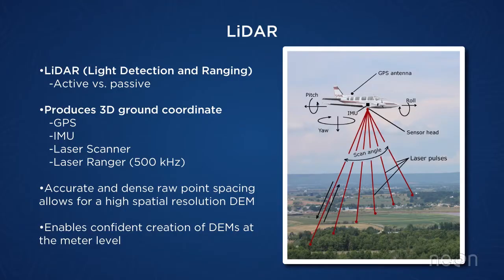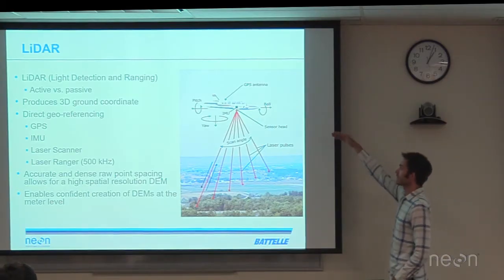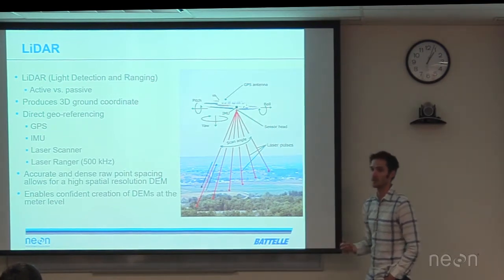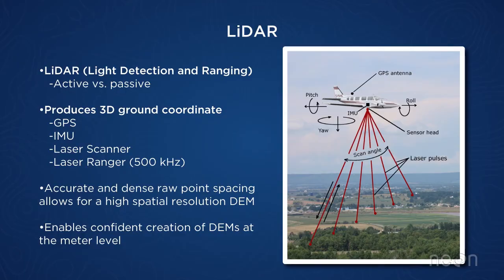LiDAR is an active remote sensing system, which means that it has its own energy source. The main subsystem of a LiDAR is the laser. We use the laser to generate a pulse of energy that comes out of the sensor, which is pointed at the bottom of the aircraft, travels down to the ground, and reflects off targets on the ground, then returns back to the aircraft.